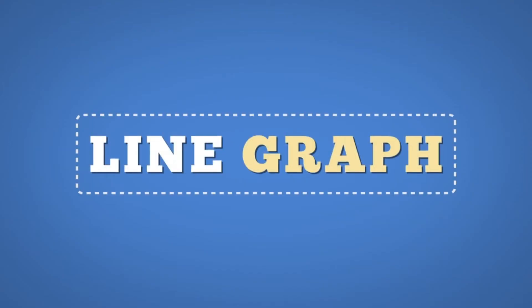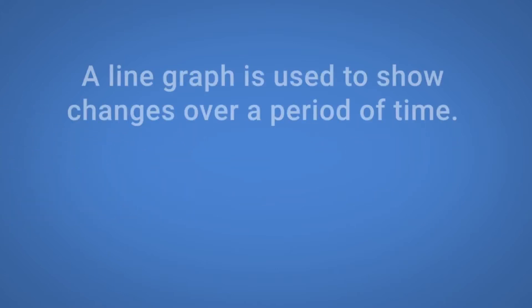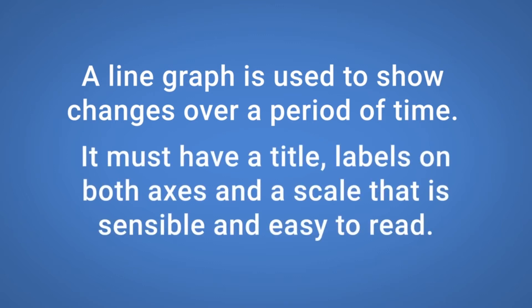A line graph is used to show changes over a period of time. It must have a title, labels on both axes, and a scale that is sensible and easy to read.